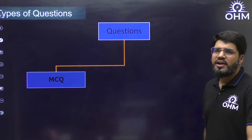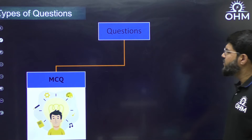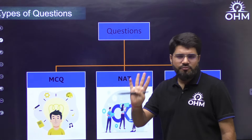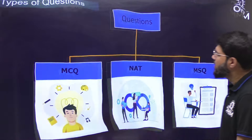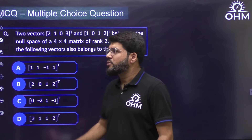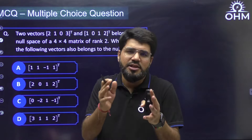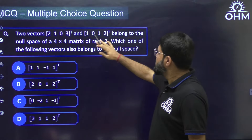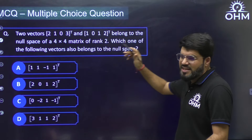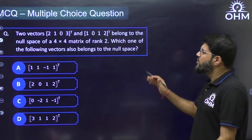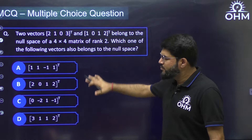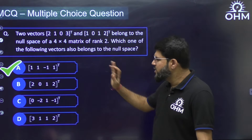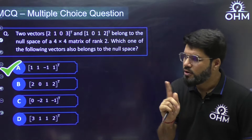Let's look at all three question varieties. MCQ — multiple choice question — has four options, out of which only one can be correct. I've taken an official GATE question: two vectors belonging to the null space are given, and you must identify which of the following vectors also belongs to the null space. Out of four choices, only one is correct. The official correct answer is A. You need knowledge of null space and linear algebra to solve it.